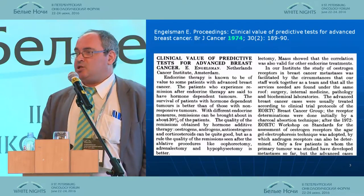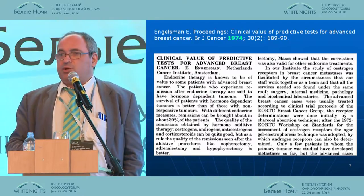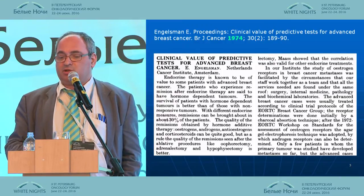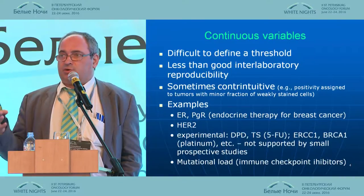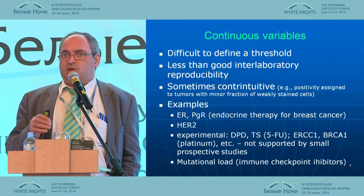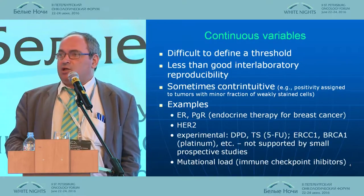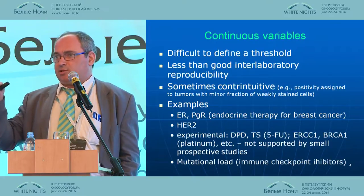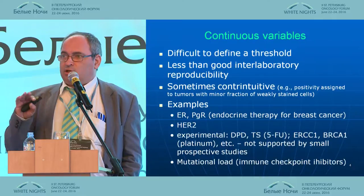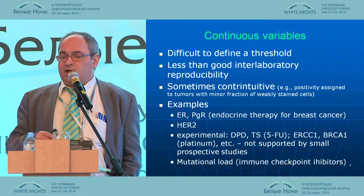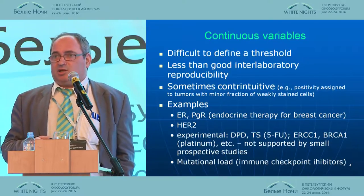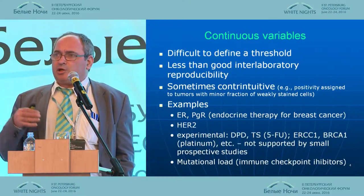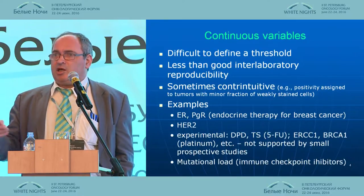This appears to be the first review on predictive tests — published 32 years ago, related mainly to endocrine treatment of breast cancer. Endocrine treatment of breast cancer is the prototype of all predictive tests, because the majority of current predictive tests rely on continuous variables. When you deal with continuous variables, it is very difficult to define what is a positive result versus a negative result. There are significant numbers of intermediate and ambivalent results, and continuous variables are more prone to inter-observer and inter-laboratory variations than other tests.